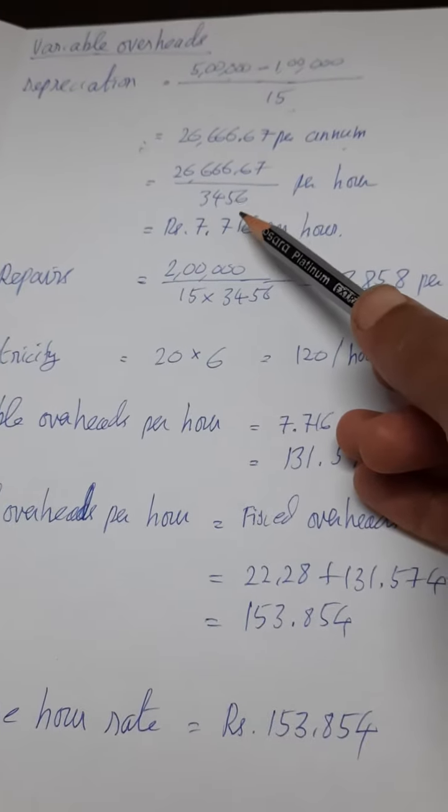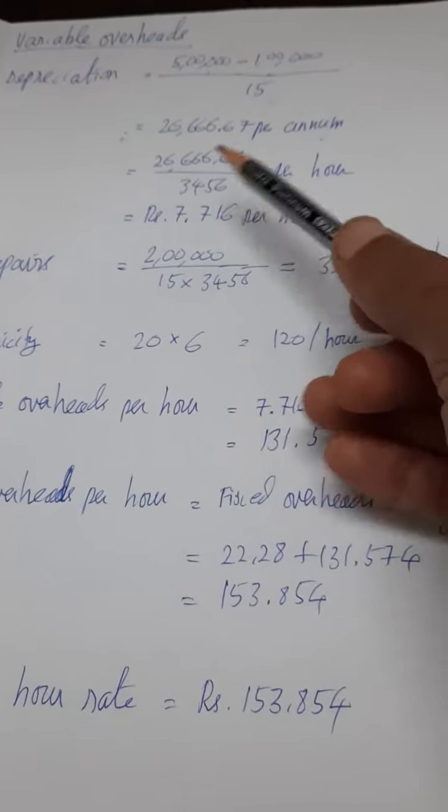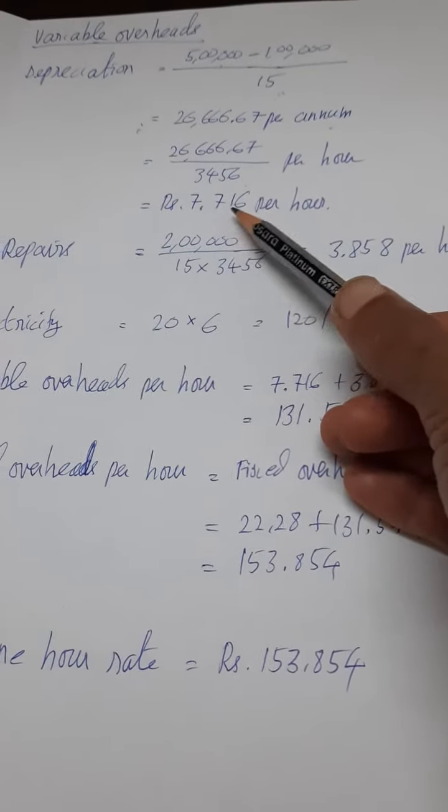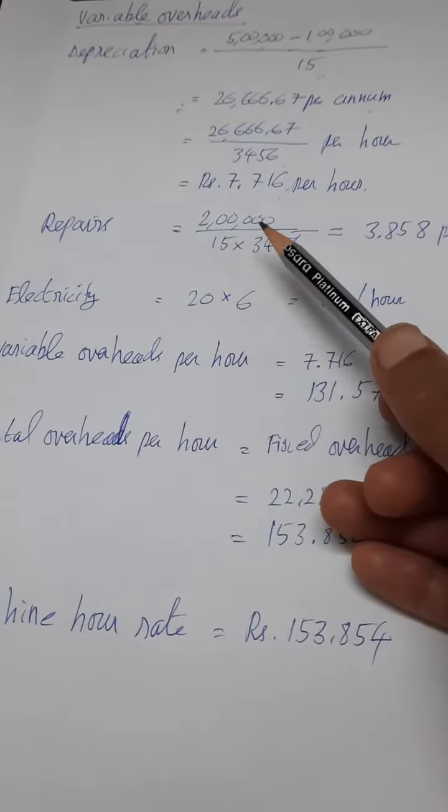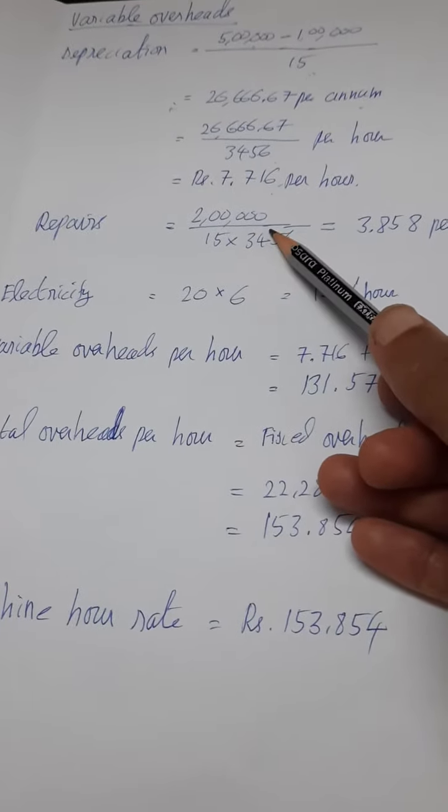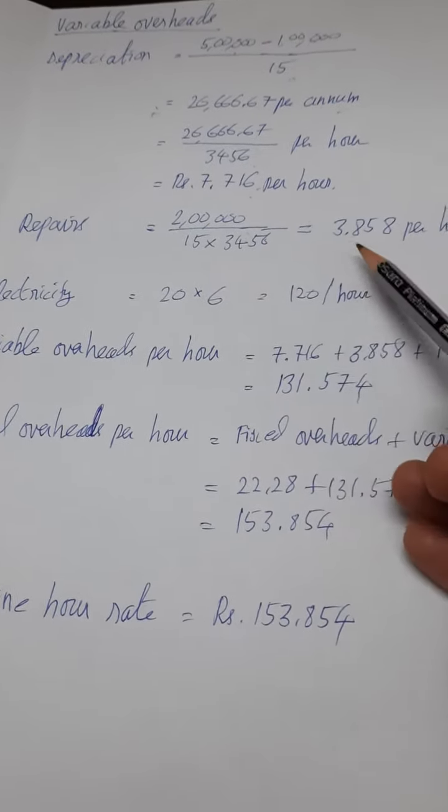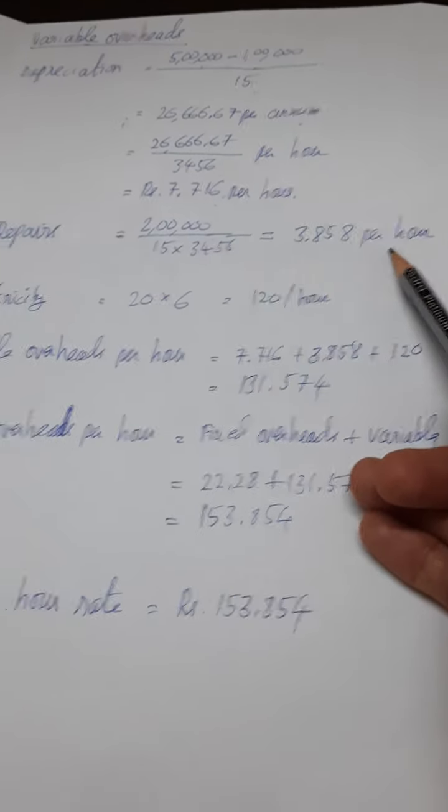Since the machine is running 3,456 hours per annum, you divide this and you are getting depreciation amount per hour as 7.716. The machine is having repair charges of 2 lakhs rupees for the entire lifespan of 15 years. When you divide this you are getting 3.858 rupees per hour for repair charges.